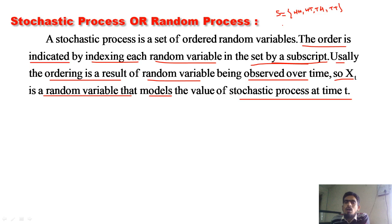Suppose the random variable denotes the number of heads. In the first element HH, you have two heads, so you assign real number 2. In the second element HT, you have one head, so you assign 1. Similarly one head gives 1 and no heads gives 0. So the random variable takes values 0, 1, 2. This is from unit number 3.